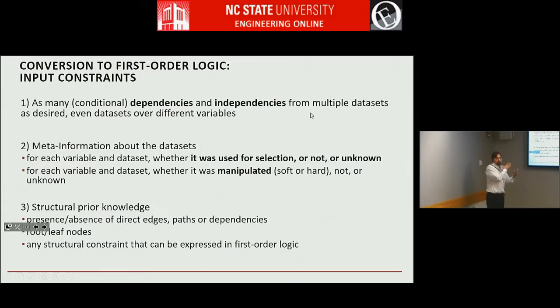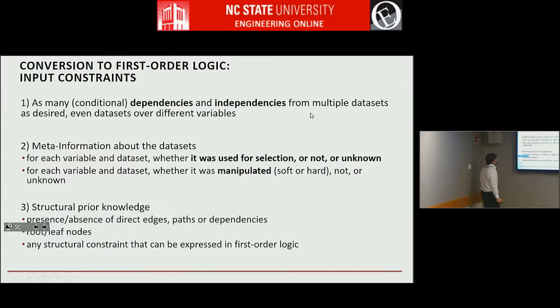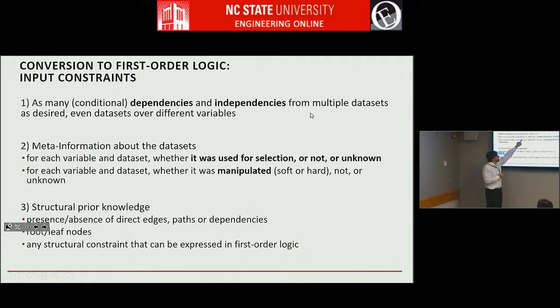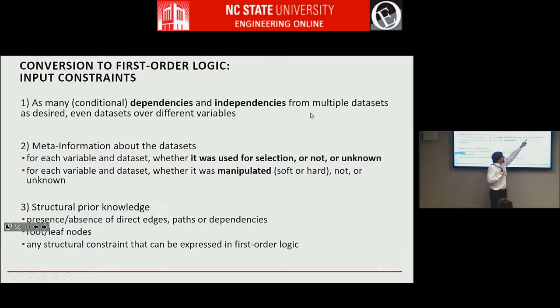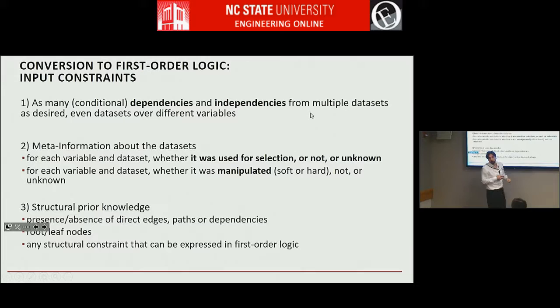We try to do this automatically for when you have a large set of data sets and have to consider selection bias and interventions. The algorithm takes as input as many conditional dependencies and independencies as you want — computed on your data from multiple data sets. It also takes meta information about the data sets: specifically, for each variable in a given data set, whether we know it was used for selection, as would be the case for a case control study, or we know it wasn't, or it's unknown.